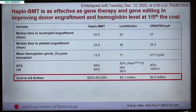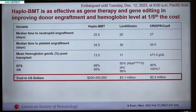Five percent of patients with sickle cell disease are born in high-income countries; 95 percent are born in low- to middle-income countries. The sticker price for haplo BMT in the United States is $200,000 to $400,000. The FDA-approved lenti-globin gene therapy costs $3.1 million and CRISPR $2.2 million. The question is: how can you scale this if outcomes look similar? Which one is scalable to reach 95 percent of the population that needs it?